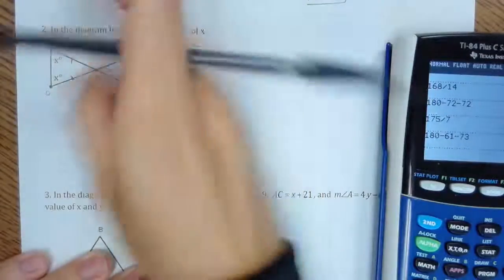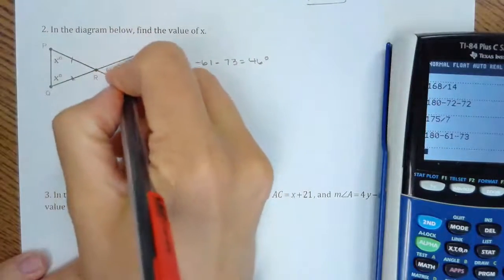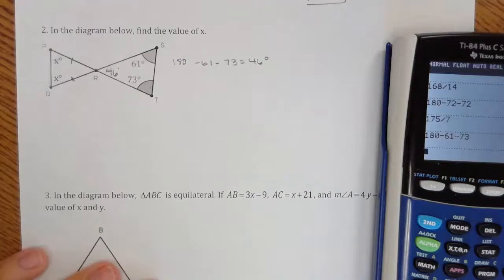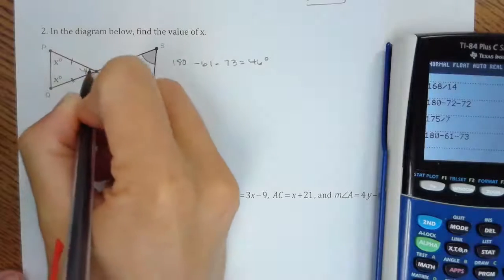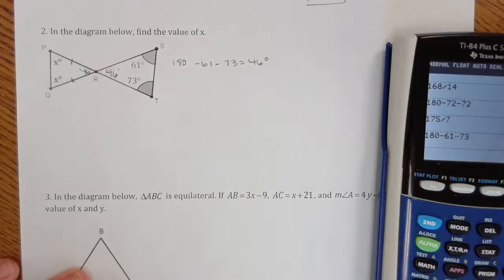Okay, so that means that this angle right here is 46 degrees. Well, due to the definition of vertical angles, that would mean that this angle is also 46 degrees.